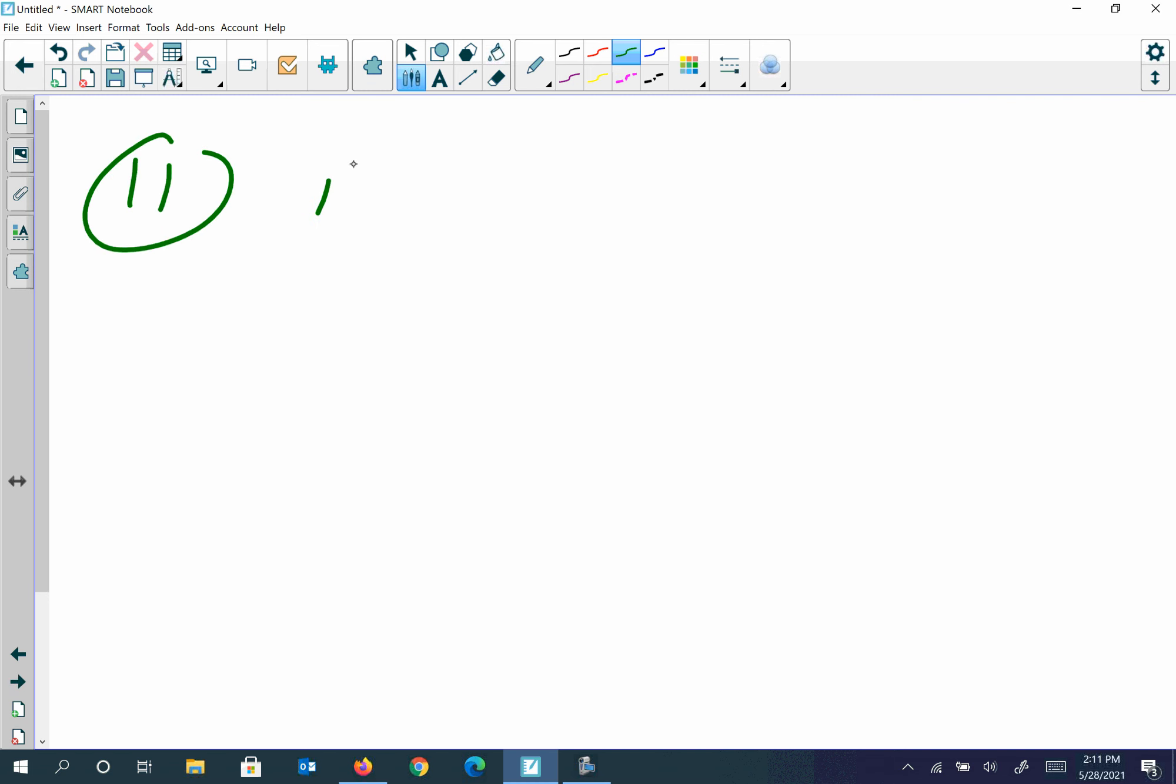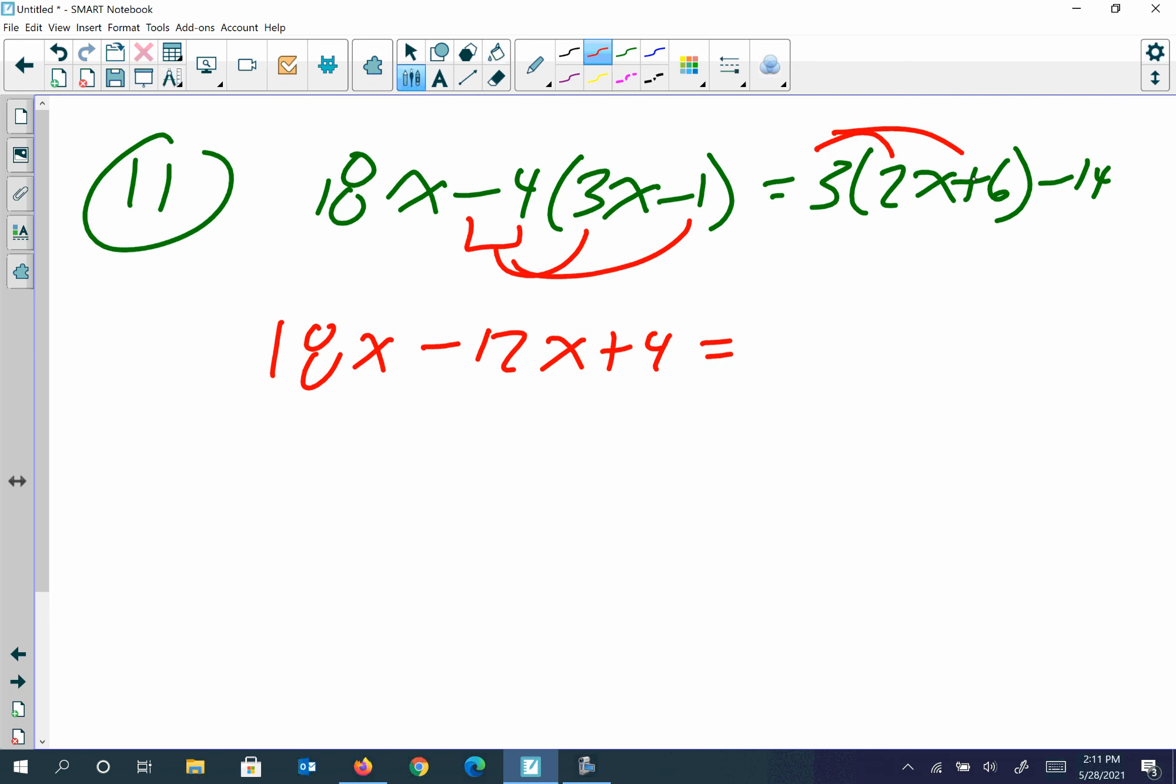Number 11, I have 18X minus 4 parentheses 3X minus 1, equal to 3 times 2X plus 6 minus 14. Remember on this one, distribute the negative 4 over the parentheses, so both terms and signs inside the parentheses will change. Distribute positive 3 over there. No signs change there because it was a positive 3 we distributed. Combine like terms. That's going to give me 6X plus 4. And then combine like terms. That's also going to give me 6X plus 4.